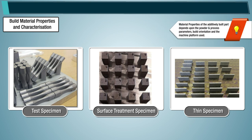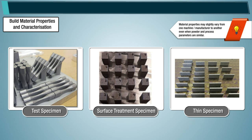Note: Material properties of the additively built part depend upon the powder and process parameters, build orientation, and the machine platform used. Unlike wrought materials, standard material data for additively built materials is not available. Material properties may slightly vary from one machine manufacturer to another, even when powder and process parameters are similar. Therefore, minimal material properties are usually established and used in the design process, taking into account different variables.